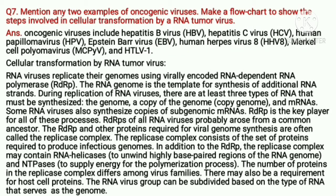Question number seven: mention any two examples of oncogenic viruses, and make a flowchart to show the steps involved in cellular transformation by an RNA tumor virus.